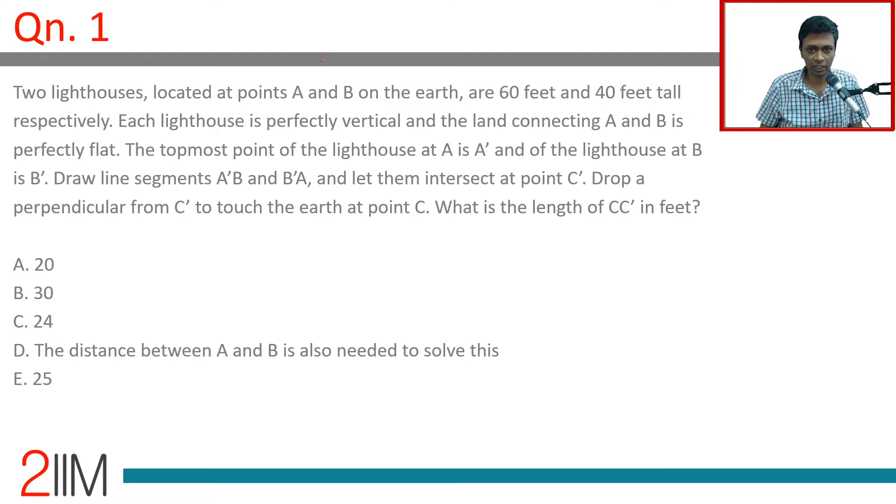Each lighthouse is perfectly vertical, as you would expect it to be, and the land connecting A and B is perfectly flat. The topmost point of lighthouse A is A', lighthouse at B is B'. Draw line segments A'B and B'A, let them intersect at point C'. Drop a perpendicular from C' to touch the earth at C.